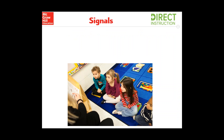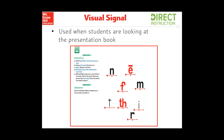There are two types of signals in Reading Mastery. One type is a visual signal, which is typically used more in the primary grades, specifically at levels K and 1 when students are looking at a presentation book. The other type is an audible signal, which you'll use at all levels of Reading Mastery. The visual signal is something that students can see, so it's very important that you have a clear signal for your entire group to see. Your presentation book will give you cues to help you with that visual signal.